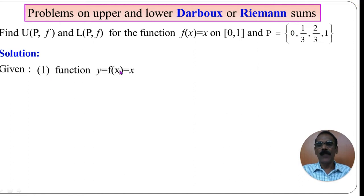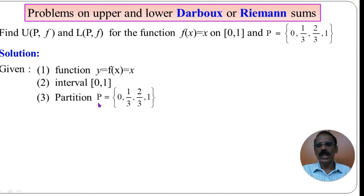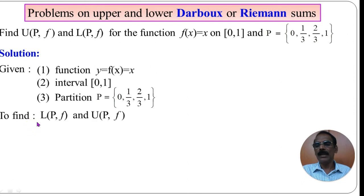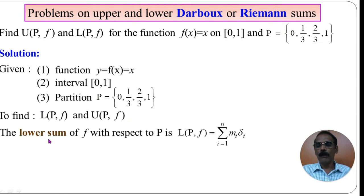We are given the function y = f(x) = x, defined on the interval [0,1]. The partition P = {0, 1/3, 2/3, 1}, which divides the closed interval [0,1] into three subintervals. We have to find L(P,F) and U(P,F), that is the lower and upper Riemann sums. The lower sum is defined as L(P,F) = sum from i=1 to n of m_i times delta_i.